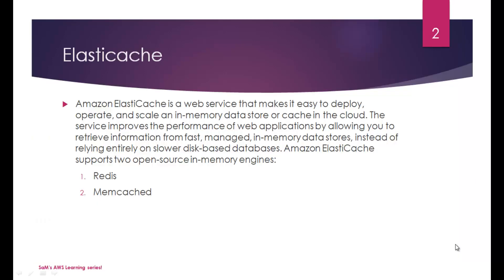Amazon ElastiCache, as the name says, is an in-memory cache service. It's a web service that makes it easy to deploy, operate, and scale an in-memory data store or cache in the cloud. The service improves the performance of web applications by allowing you to retrieve information from fast, managed in-memory data stores instead of relying entirely on slower disk-based databases.